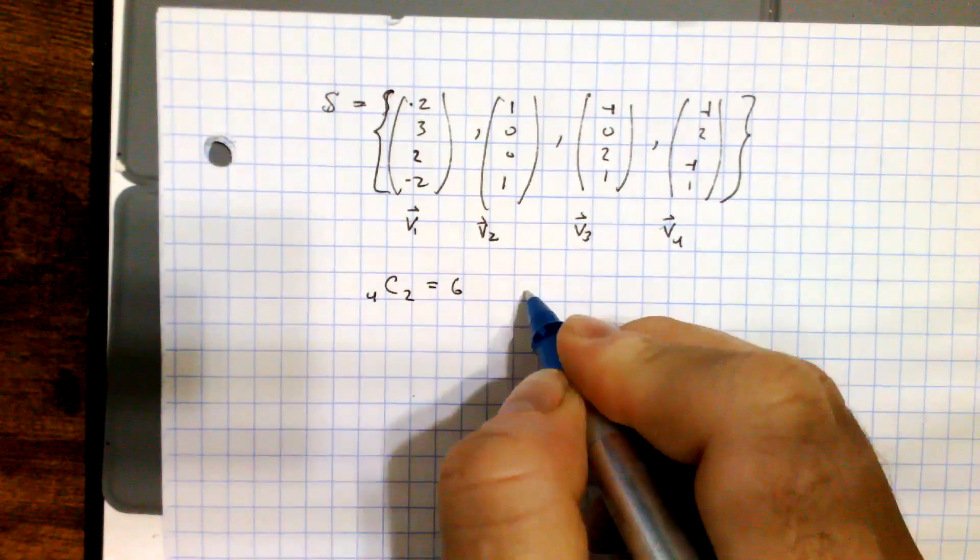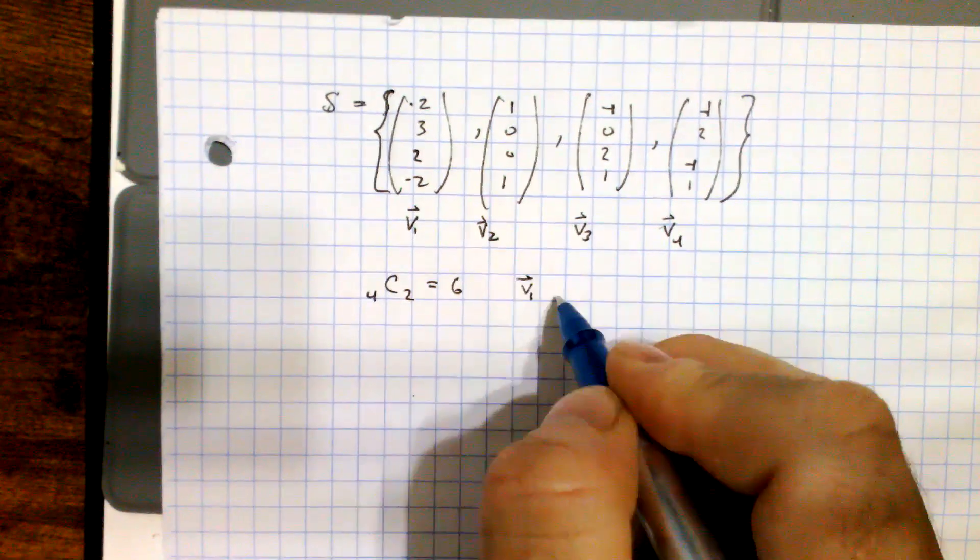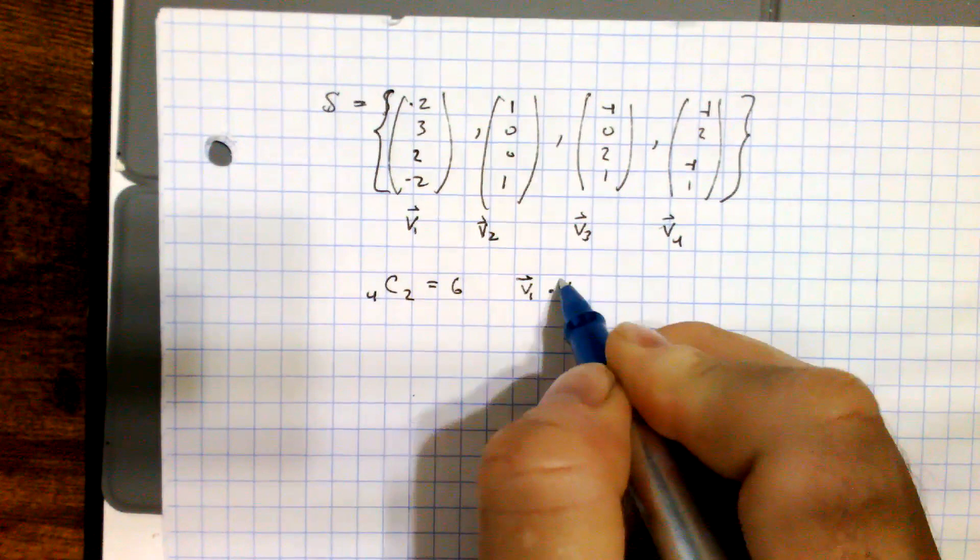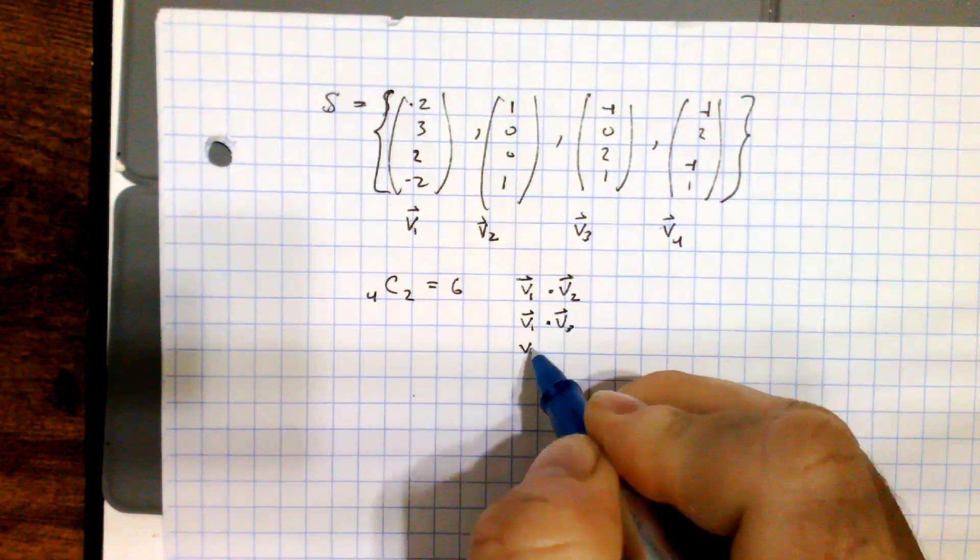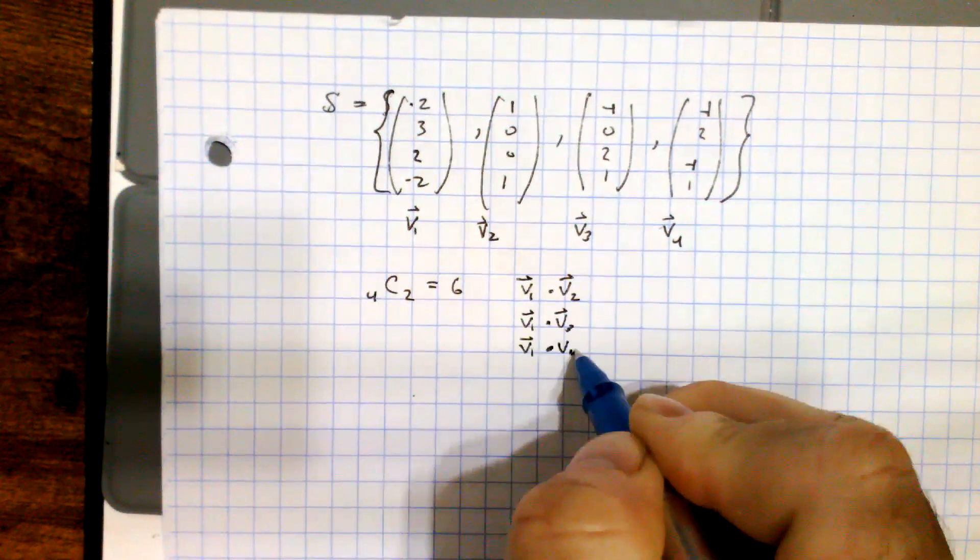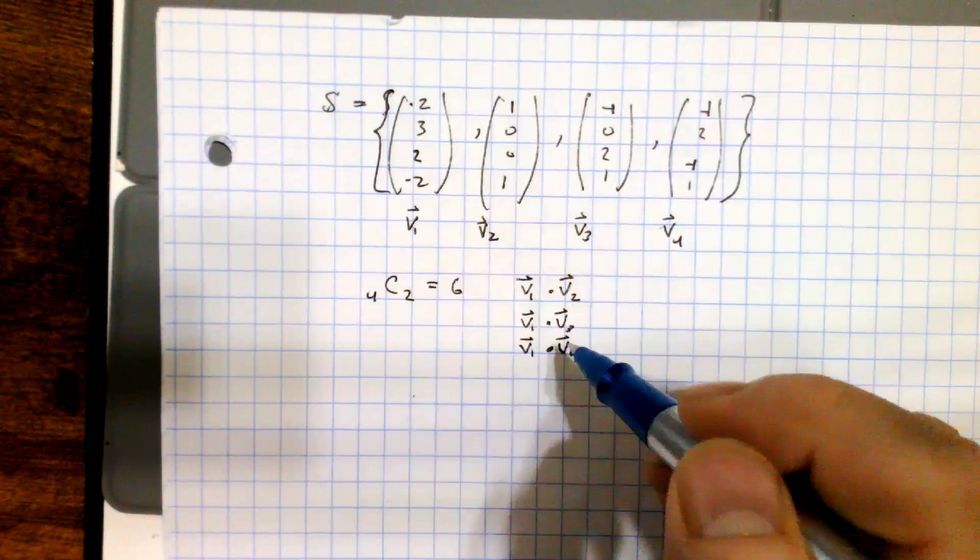So for me, the easiest way to do that is just to hold one fixed. I'm going to take B1, and I'm going to dot it with B2, and take B1 and dot it with B3, and B1 and dot it with B4. So that takes care of all the B1s.